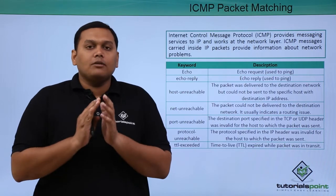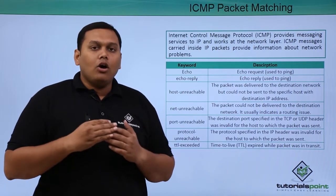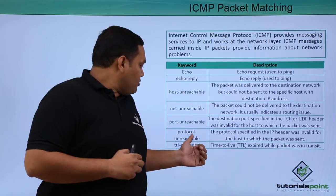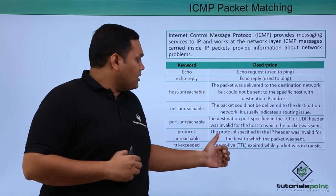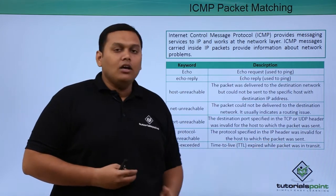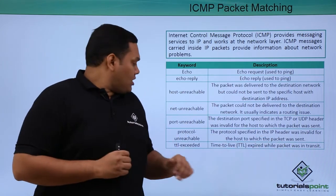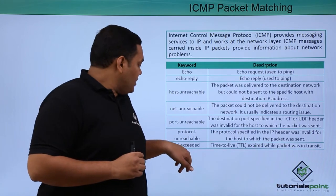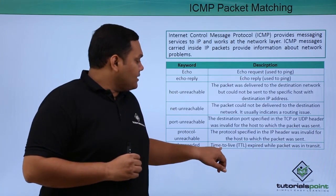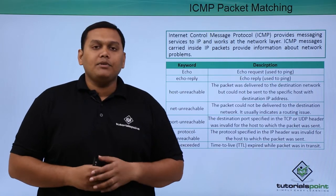Port unreachable: the port went down and is not available or responding to pings. Protocol unreachable: the protocol specified in the IP header was invalid. The last type is TTL exceeded — time to live expired while the packet was in transit.